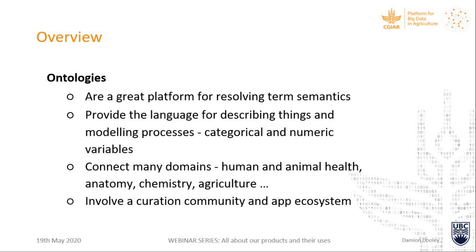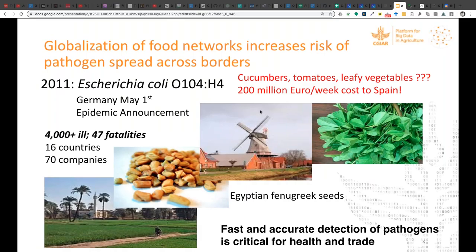Ontologies involve a curation community and an app ecosystem — the ontology is quite dependent on this ecosystem. They have quite a learning curve, but our learning started within the context of public health. At the Centre for Disease Control, epidemiologists are studying foodborne disease outbreaks and infectious diseases all the time.